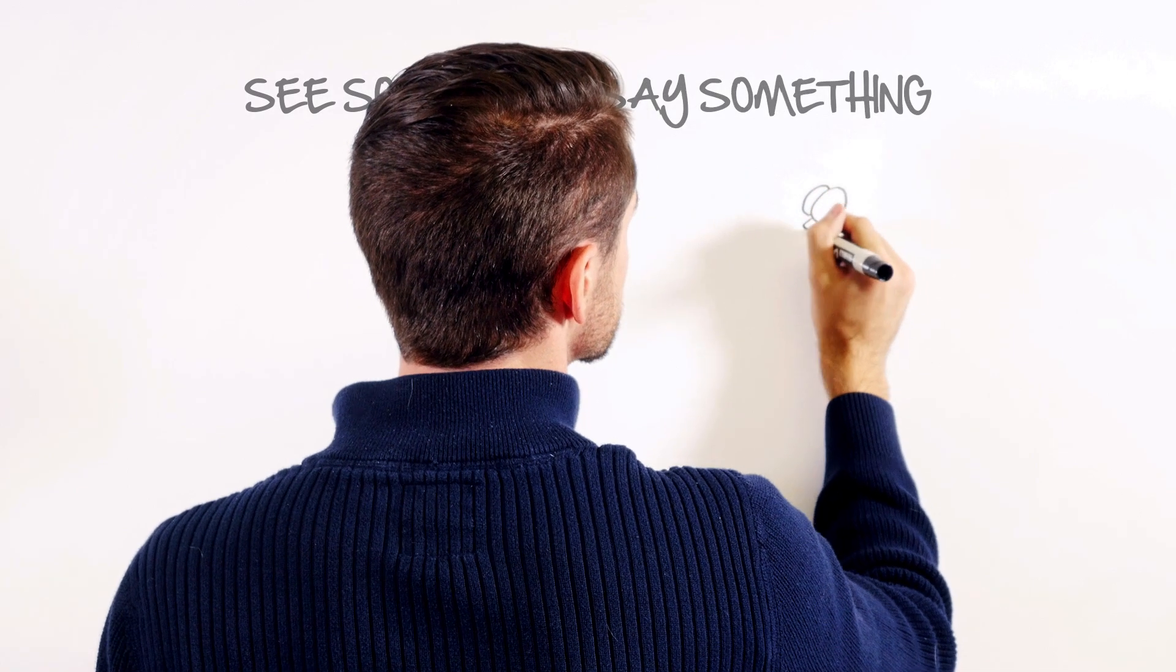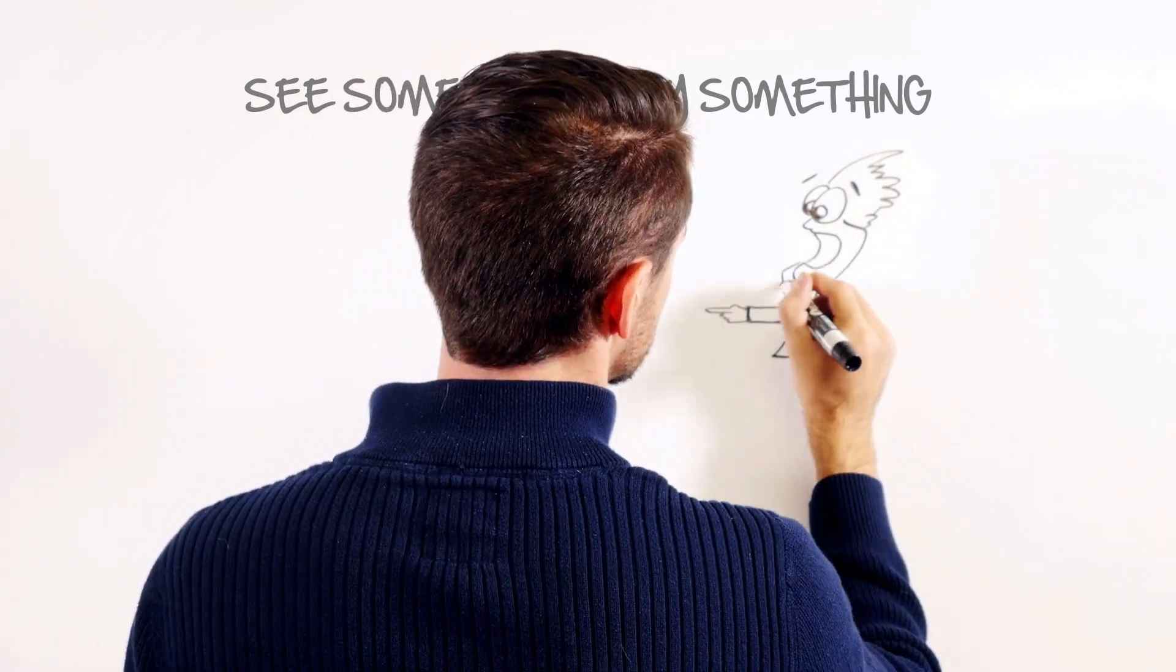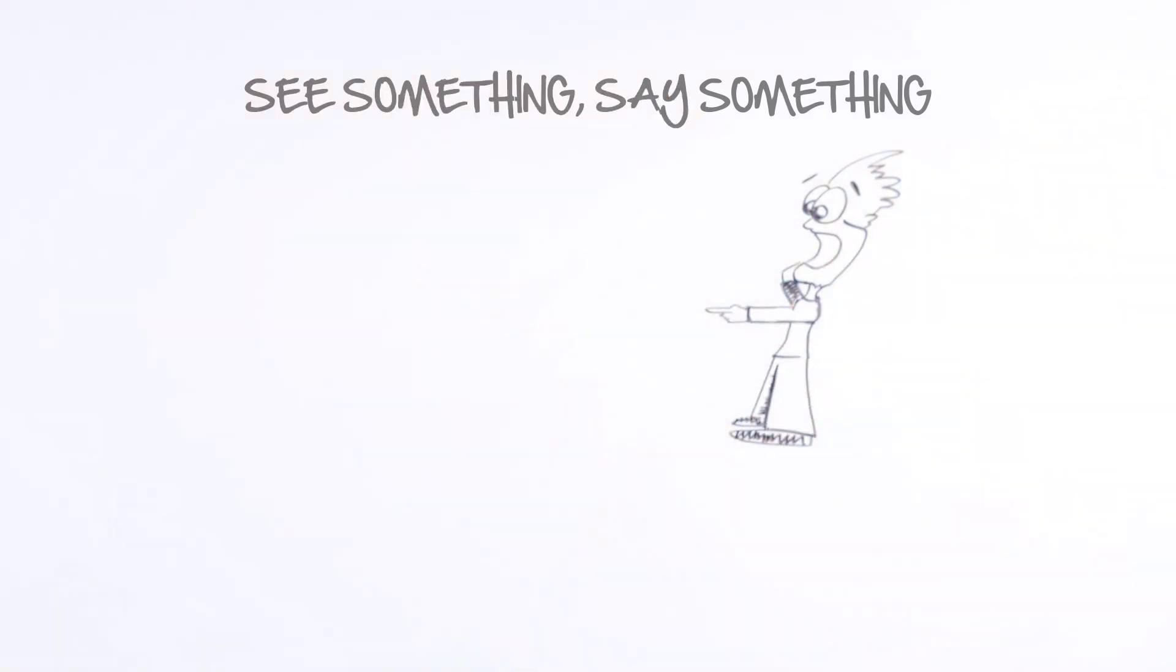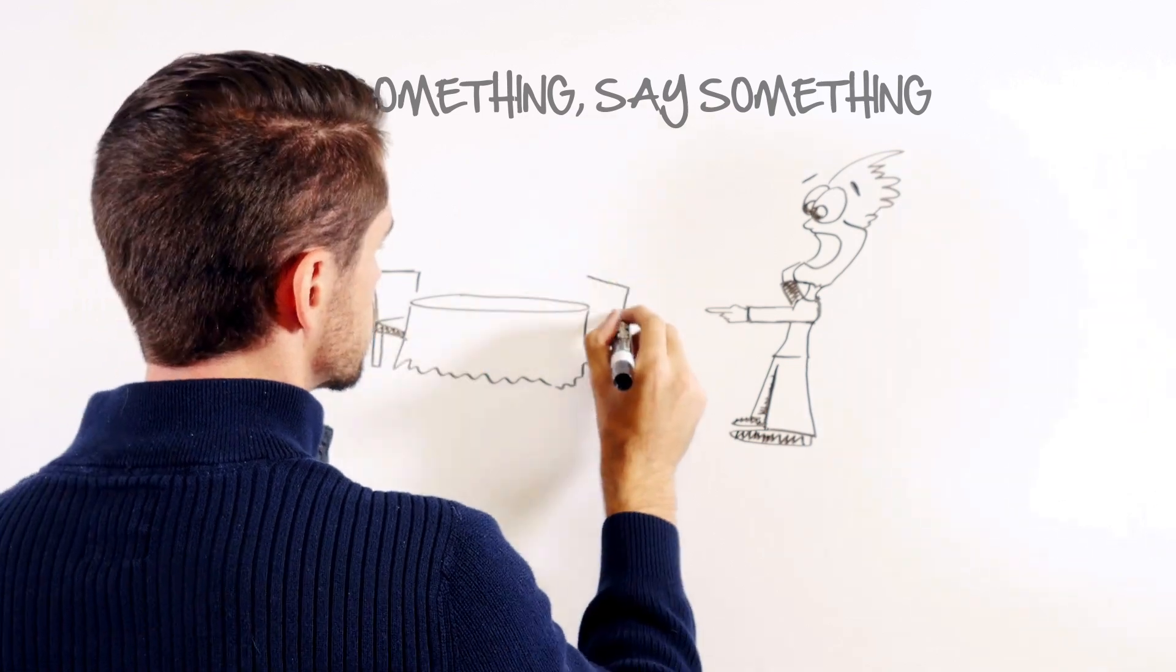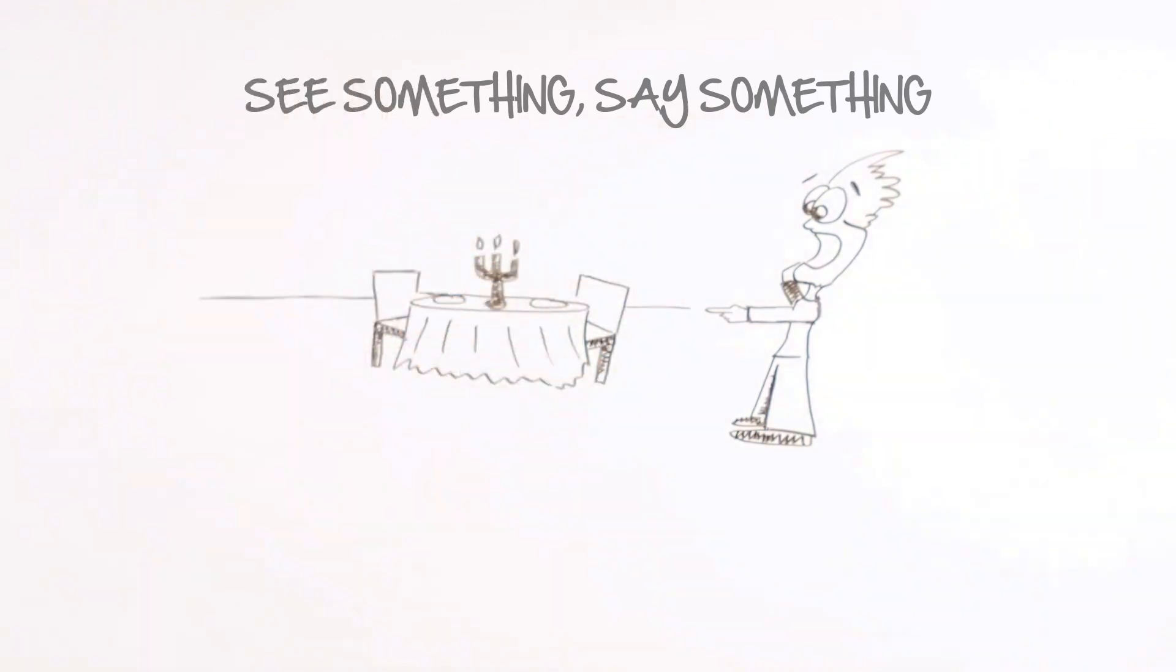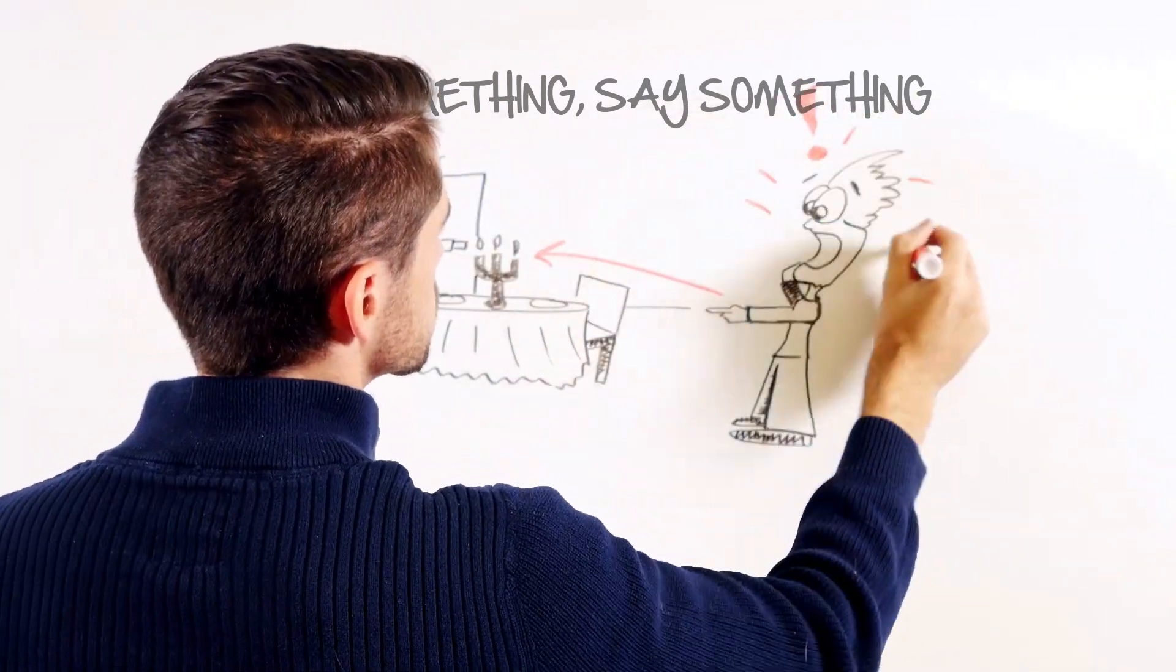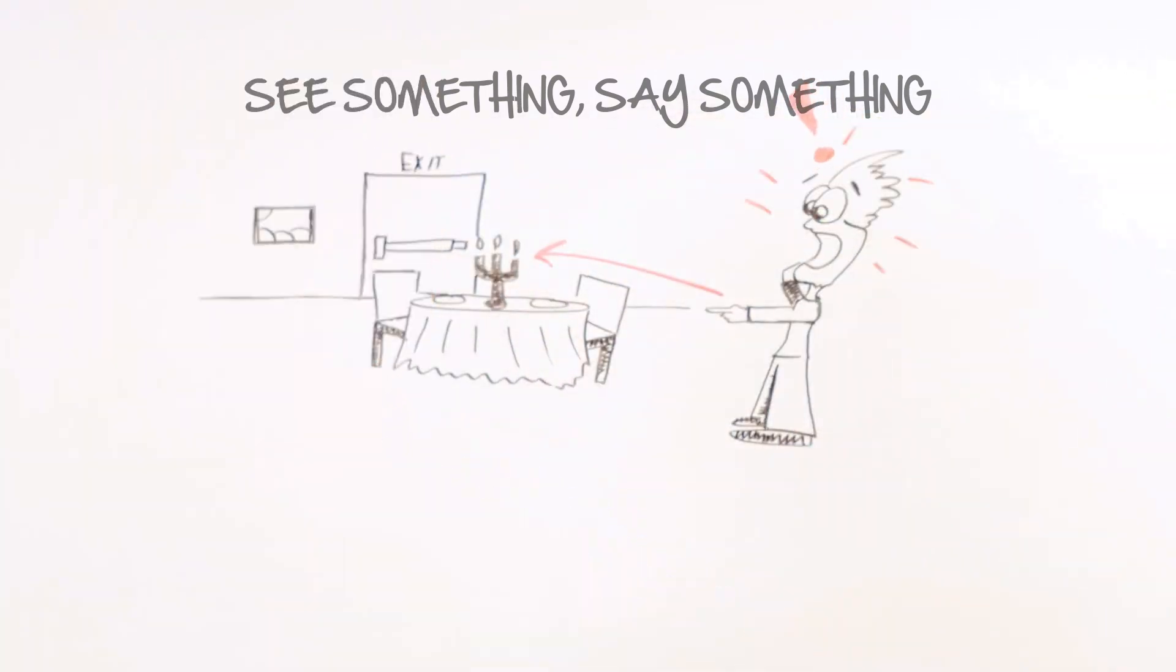Code requirements impact many aspects of door openings and can affect the selection of almost every hardware item. Which doors require panic hardware? What hardware must be used on a fire door? Where can delayed egress locks be used? And just as important, whether we're specifying, supplying, installing, or inspecting doors and hardware, it's our responsibility to speak up if we see situations that we know are not code compliant.